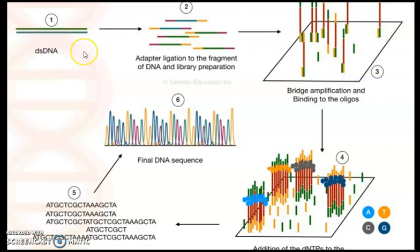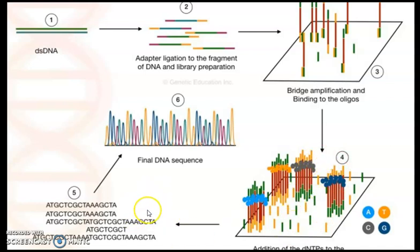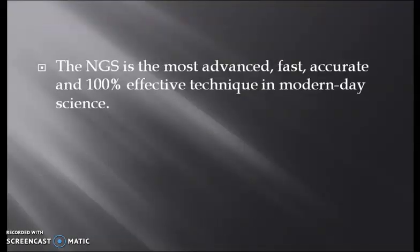The whole NGS process involves ligation and fragmentation, bridge amplification and binding to the oligos, addition of dNTPs to the newly amplified DNA, sequencing and data generation, and data analysis. NGS is the most advanced, fast and accurate technique and it is a widely used robust technique in modern-day science.